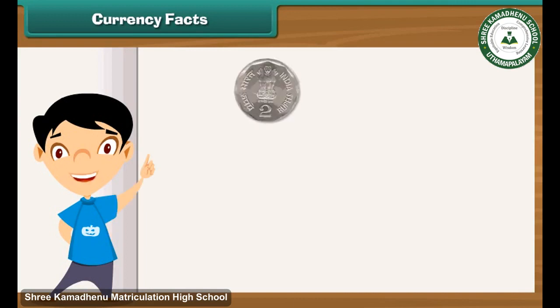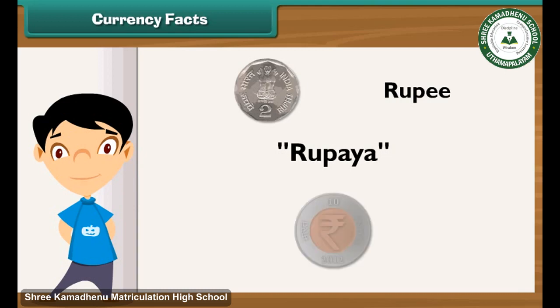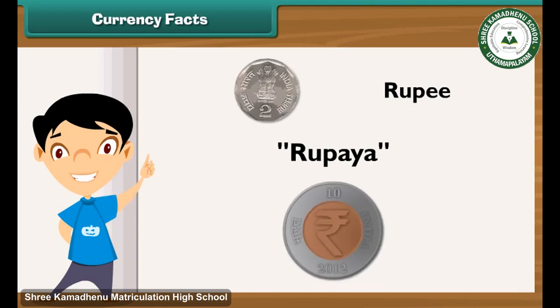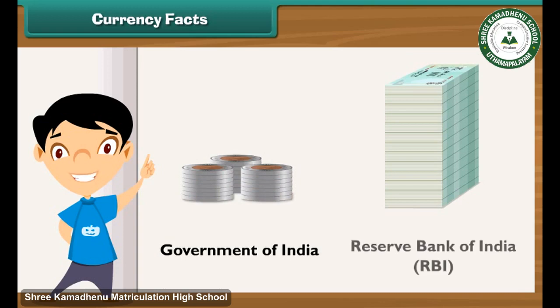The Indian currency is known as the rupee. The word rupee comes from the Sanskrit word 'rupaya,' which denoted the stamped coins used in ancient India. This is the symbol associated with the Indian rupee. Indian currency is made up of coins and notes known as banknotes. While the coins are minted by the Government of India, the banknotes are issued by the Reserve Bank of India, RBI.